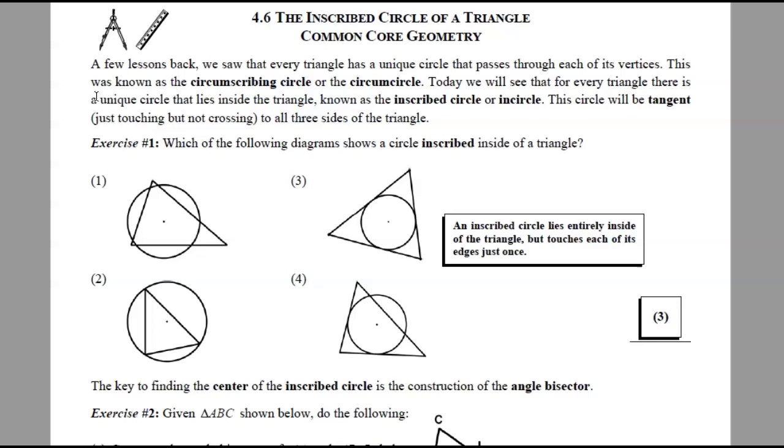First off, to identify an inscribed circle, we want one that's entirely inside the triangle, so in this set of options it would be number three. Number two is a circle on the outside, so that's going to be a circumscribed circle, but the inscribed circle is number three.